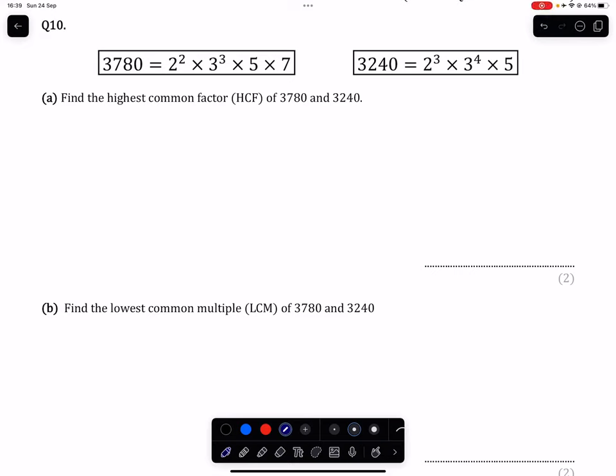Question 10. We are given 3,780 in terms of its prime factors. We are given 3,240 in terms of its prime factors. And part A is asking us for the highest common factor of those two numbers.